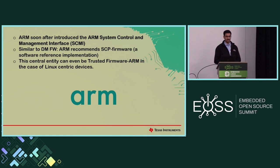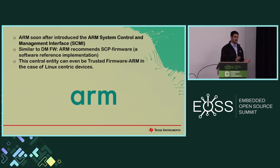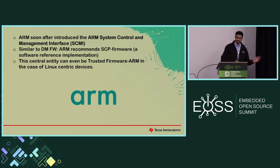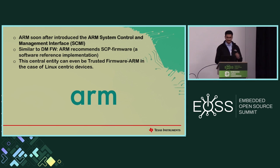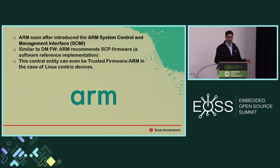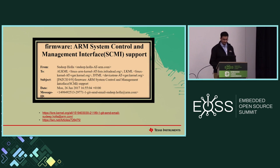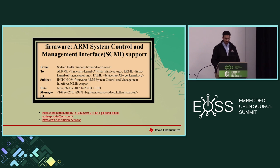Soon after, ARM followed by introducing a standard ARM SCMI protocol — the System Control and Management Interface — which is somewhat similar to the TI SCI protocol. Instead of the device manager firmware I talked about earlier, ARM recommends the SCP firmware, which is an open source project on GitHub. This central entity does not necessarily have to be SCP firmware; it can also be implemented inside ARM trusted firmware, which runs on your Cortex-A cores itself. Here's a photo of the patch where ARM started to add support for SCMI inside Linux — almost a year later, in June 2017.